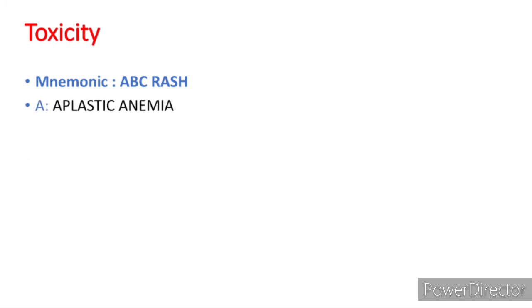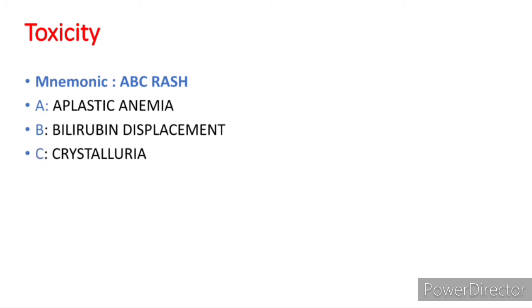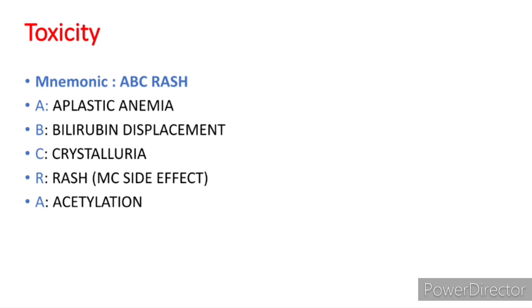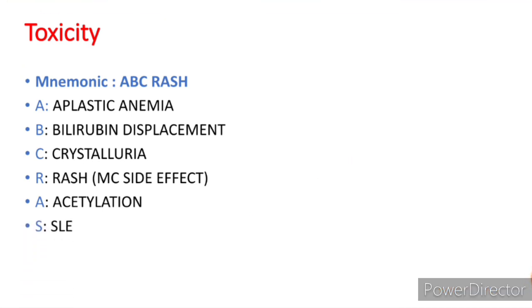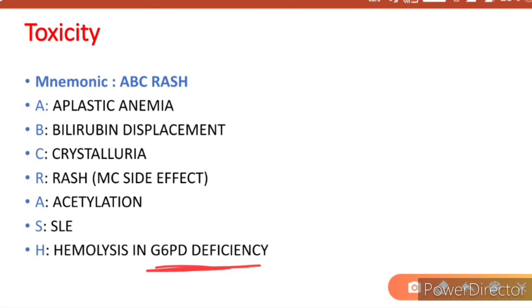For toxicity, the mnemonic is 'ABC RASH.' A stands for aplastic anemia. B is bilirubin displacement. C is crystalluria. R is rash, which is the most common side effect of this group. A is acetylation, which causes SLE (systemic lupus erythematosus). S is SLE. H is hemolysis in G6PD deficiency — G6PD being an enzyme-related deficiency.